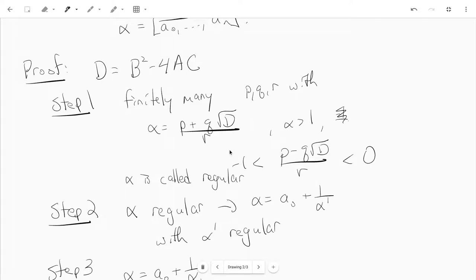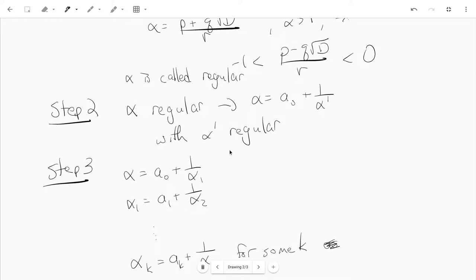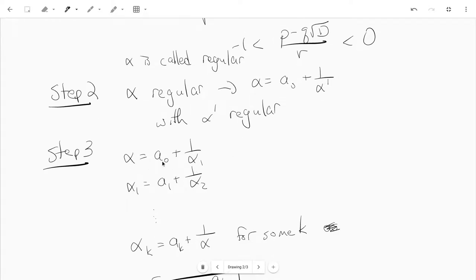And here comes the next step. You write alpha as a zero plus one over alpha one, where alpha one is regular, right? Alpha one is a one plus one over alpha two, where alpha two is regular